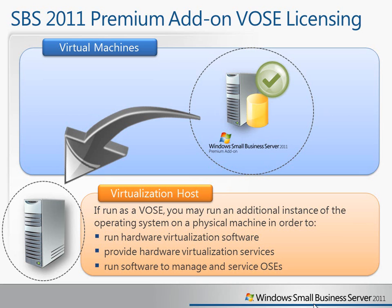As long as you don't run any other workloads on that parent partition — and that includes SQL, Active Directory, and any other workload — you can use that same server license to just run the Hyper-V role. That allows you to use that one single copy of the Premium add-on to both be the parent partition and also run as a virtual machine. Again, that's exactly the same licensing you'll find in Windows Server Standard.